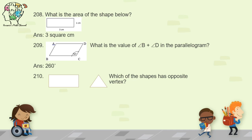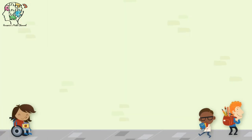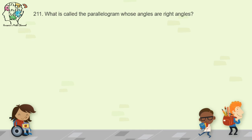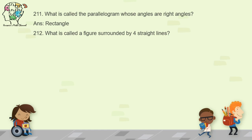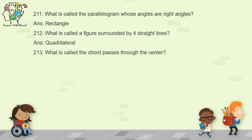Question 211: what is called a parallelogram whose angles are right angles? It is called a rectangle. Question 212: what is called a figure surrounded by four straight lines? A figure with four straight lines is generally called a quadrilateral.